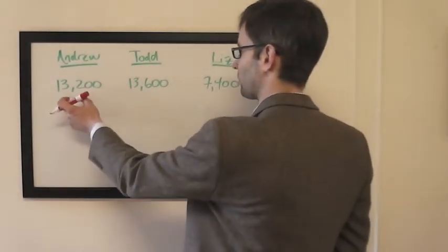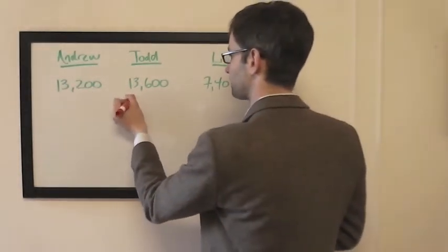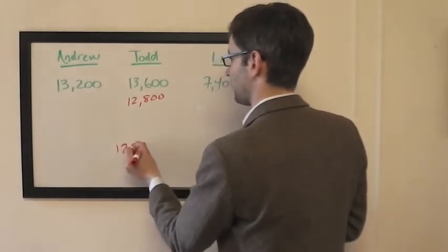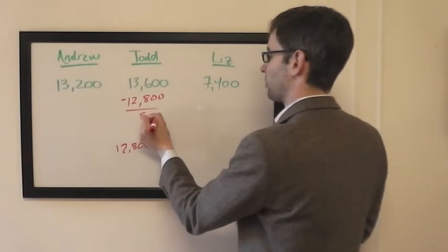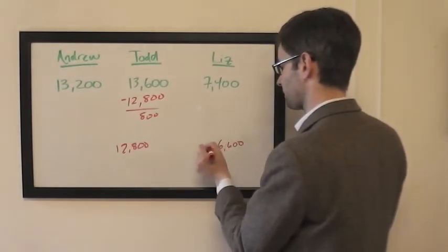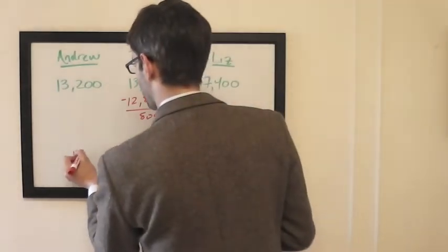The math here is pretty simple. 13,200 doubles up, that's going to be 12,800. And if Todd misses it, that wager should be left with 800. So Liz can wager up to 6,600, and Andrew can wager up to 12,400.